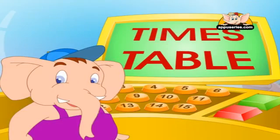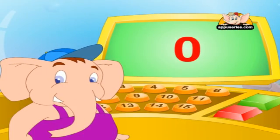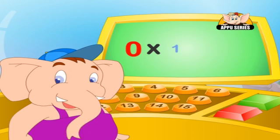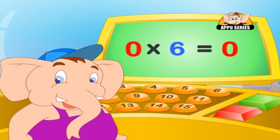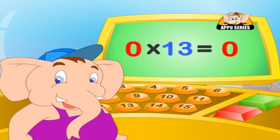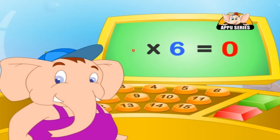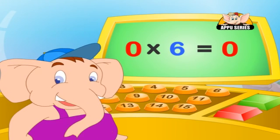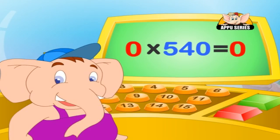Let's learn our zeros table. In the zeros table, whatever we multiply by 0, the answer will always be 0. Now that's how easy multiplication tables can be. 0 into 6 is equal to 0, and 0 into 540 is also equal to 0. Isn't that cool?